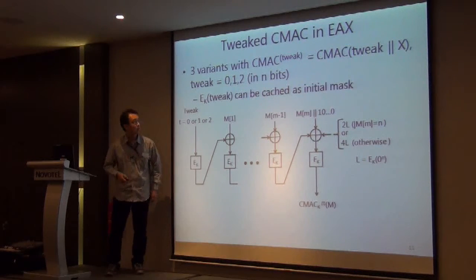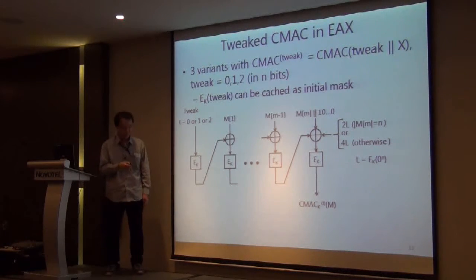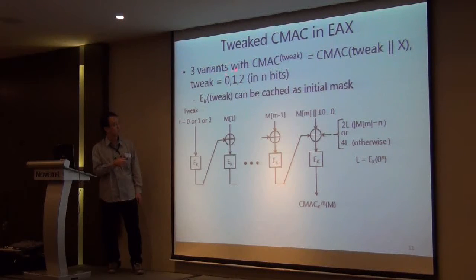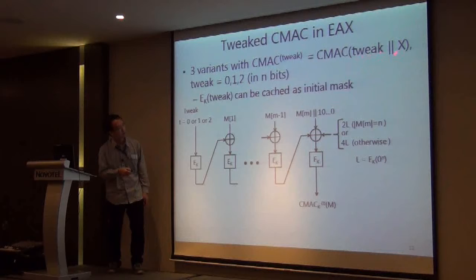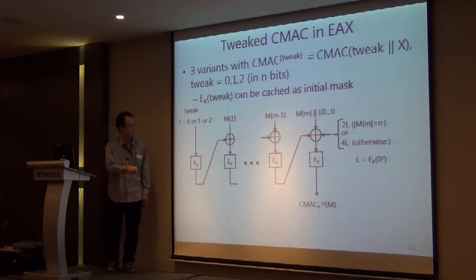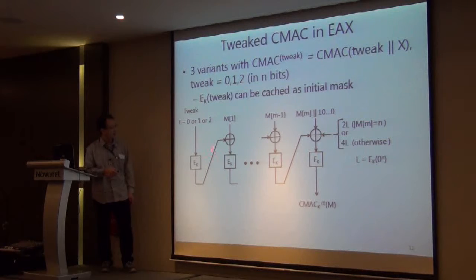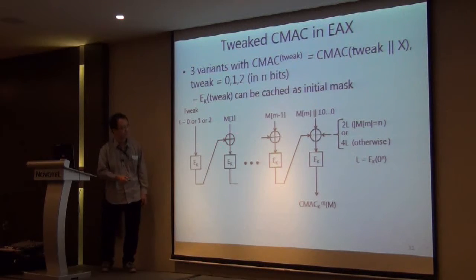In the case of EAX, the tweaking method is quite simple. We need three variants, so we prepare three tweaked values in N bits — 0, 1, and 2 — and the tweak is prepended to the message before performing CMAC. This value can be pre-computed and used as an initial masking value.